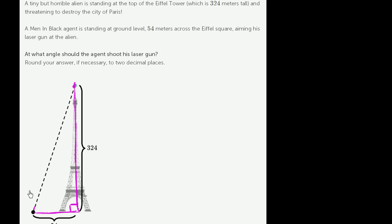What they're really asking us is, what is this angle right over here? They've given us two pieces of information: the side that is opposite the angle, and the side that is adjacent to the angle.